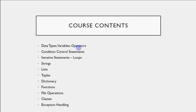Without knowing data types, variables, and operators, you can't do anything in a language — so these are very foundational. Then conditional control statements like if-else, how you check conditions. How to use loops. Python also has a great feature: it has pre-built data structures like strings, lists, tuples, and dictionaries. They help you manage data and perform operations in a much more effective and easier way, because there are many pre-built methods available.